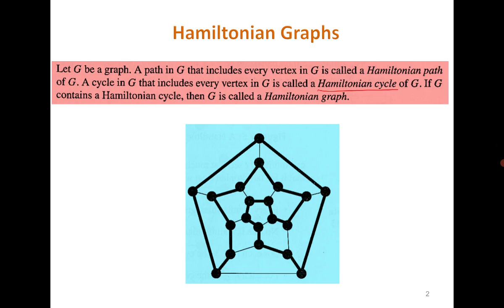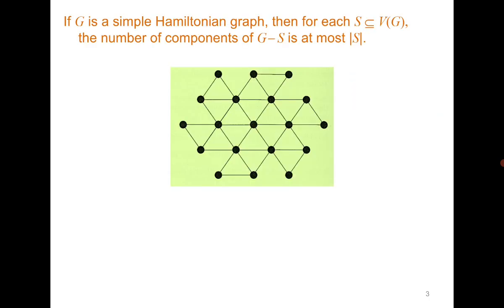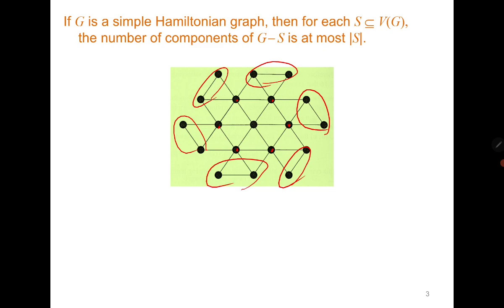This graph is Hamiltonian. Then we discussed a result which says that if G is Hamiltonian, then for each subset S of the vertex set, the number of components of G minus S is at most the cardinality of S. It means that if you manage to find S — for example, if I consider S with these six vertices and delete it, then the number of components are seven, which is more than the cardinality of S, and therefore this graph is not Hamiltonian.